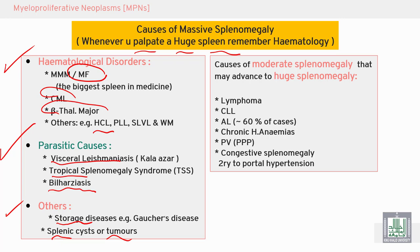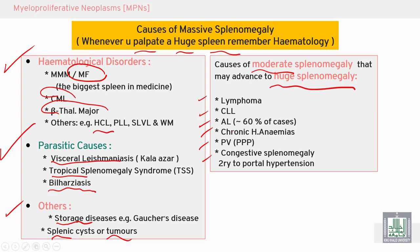Moderate splenomegaly — not huge, just moderate — is seen in lymphoma, chronic lymphocytic leukemia, some types of acute leukemia, chronic anemia, polycythemia vera, congenital splenomegaly, and secondary to portal hypertension.